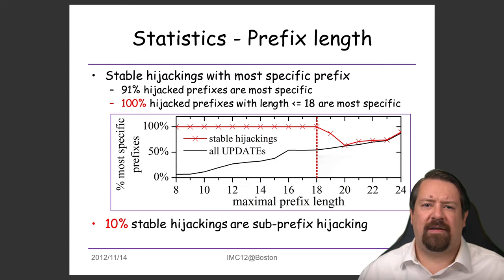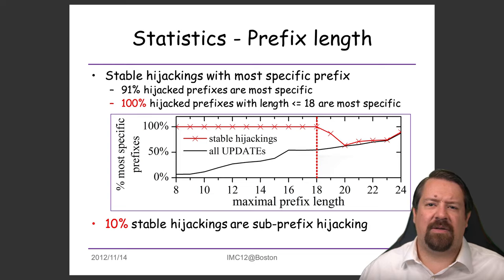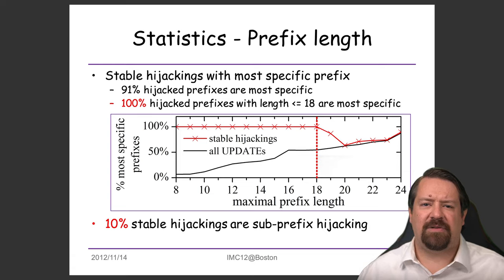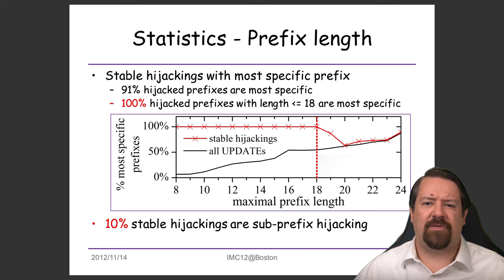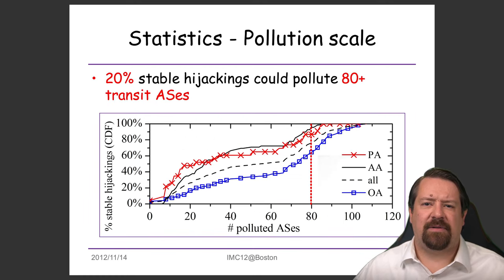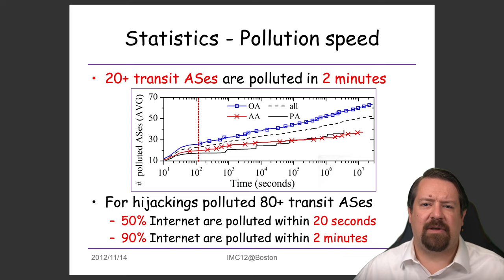The vast majority of hijacked prefixes are the most specific advertised prefix. While accidental hijacking would not be expected to target any particular prefix length, this points to the malicious nature of the hijacking in that they target the most specific prefix, which is the one that propagates furthest through the internet. Only 10% of stable hijackings are sub-prefix hijackings, which have the potential to achieve 100% coverage in terms of AS pollution. These stable hijackings pollute a large percentage of transit ASs, with the first 50% happening within 20 seconds and 90% within two minutes.